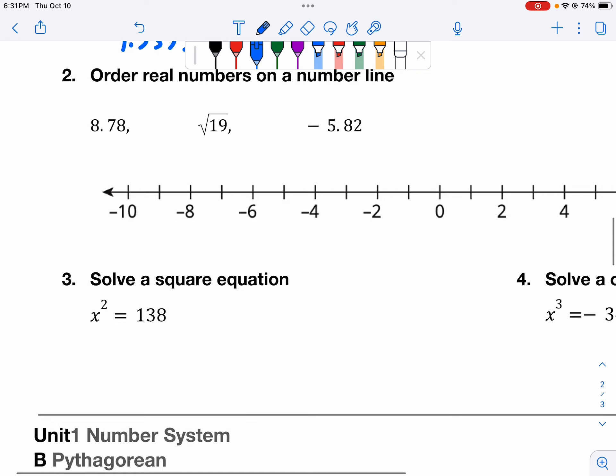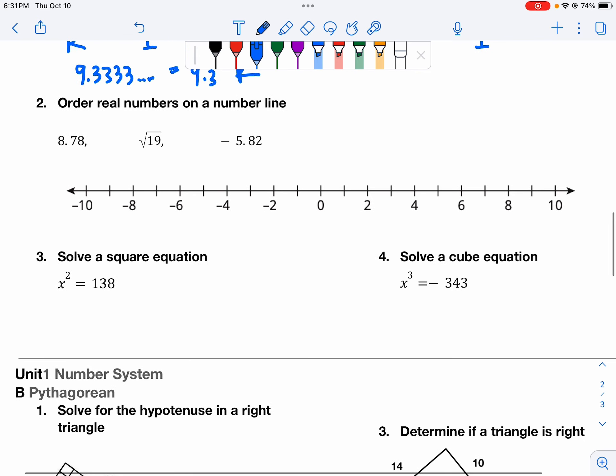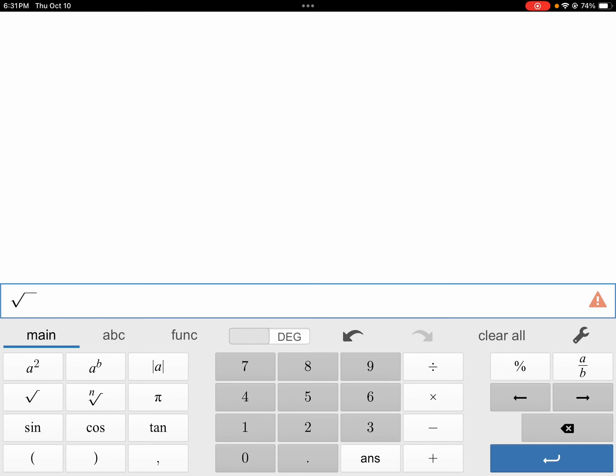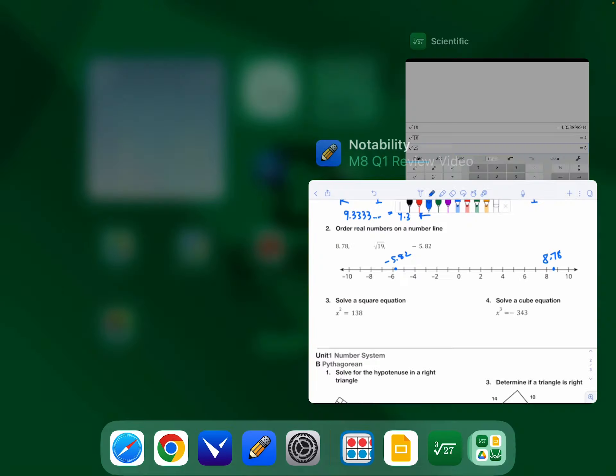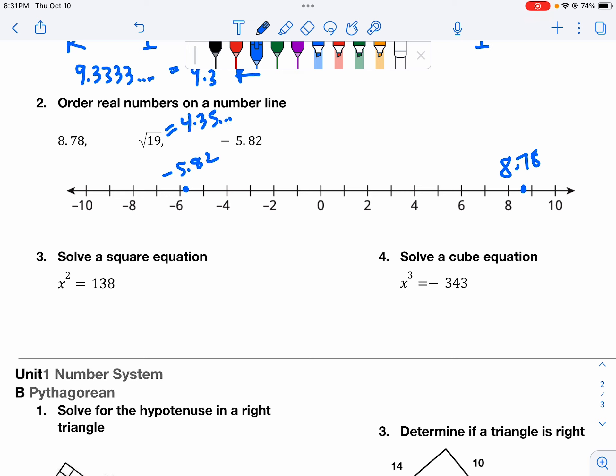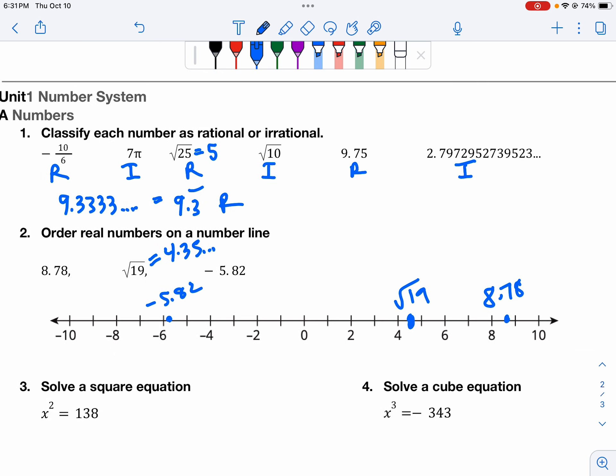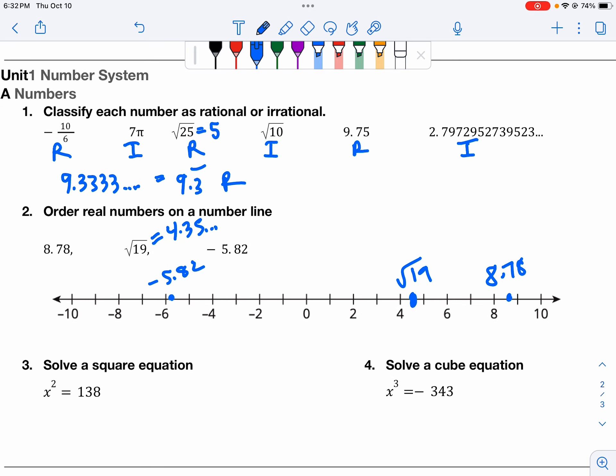Placing numbers on the number line. You guys were great at this. 8.78. Remember, we're estimating. So 8.78 is more than 8.5. It's almost 9. Negative 5.82. That is almost 6. The square root of 19. I can use my calculator there. I can use my thinking, knowing that it's a little bit more than the square root of 16. The square root of 16 is 4. And the square root of 25 is 5. So it has to be between 4 and 5. So 4.35. That's an irrational number, by the way. But we can still put it on the number line.